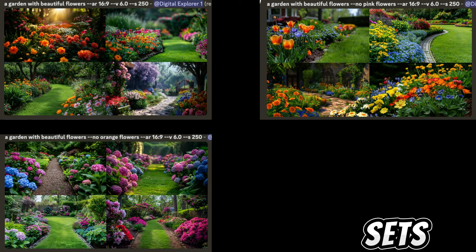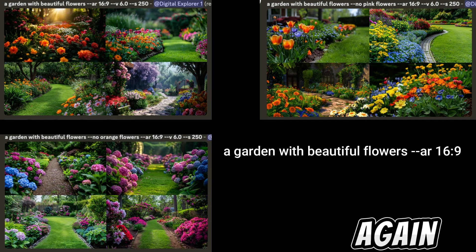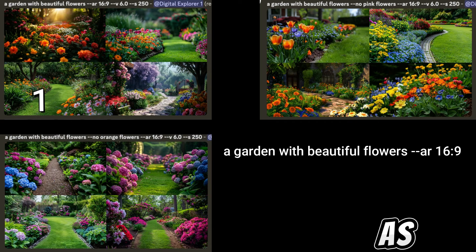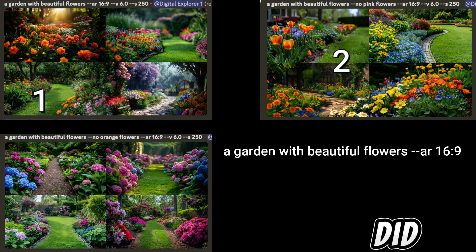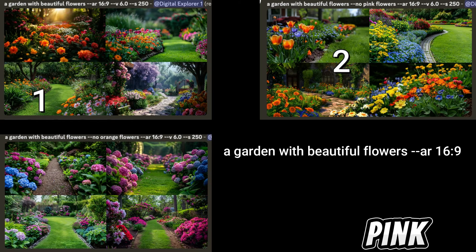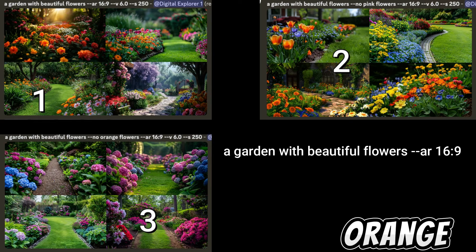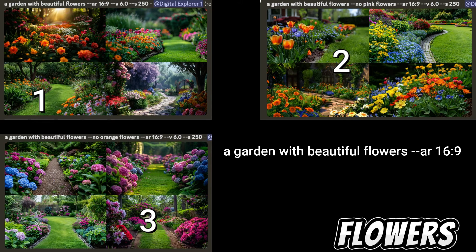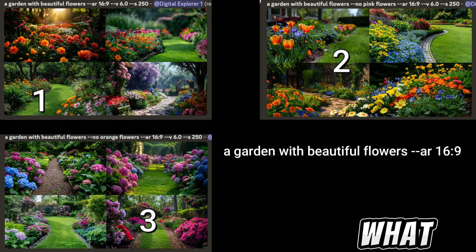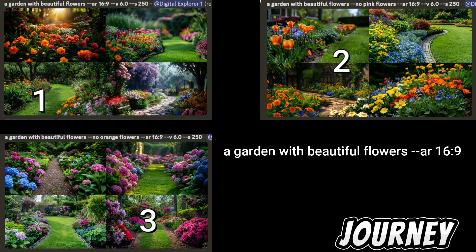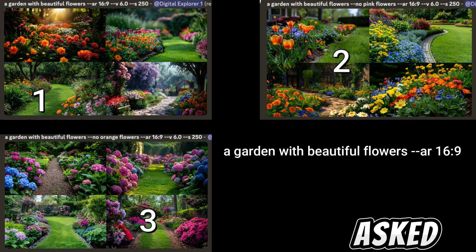On our second example, we used the prompt: a garden with beautiful flowers. The first image shows a garden with all sorts of flowers in different colors. On the second image we specified `--no pink flowers`, and the garden has no pink flowers. On the third, we specified `--no orange flowers`, and you can see blue and pink flowers but no orange. That's how the no parameter works — Midjourney generates the image without whatever you specify.